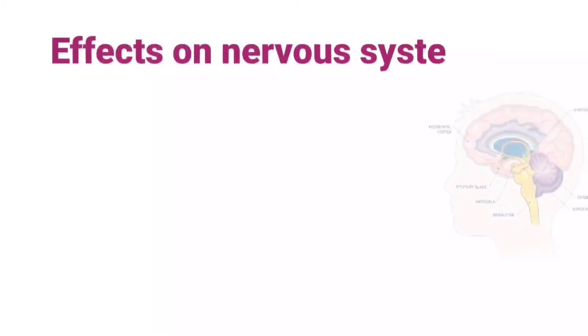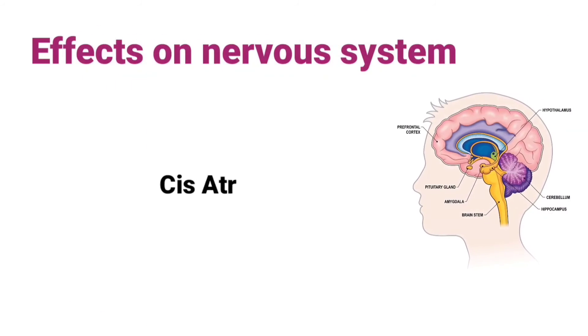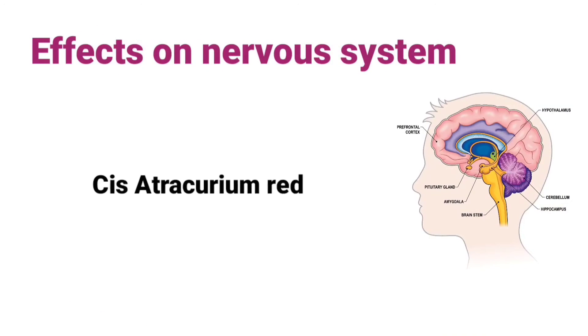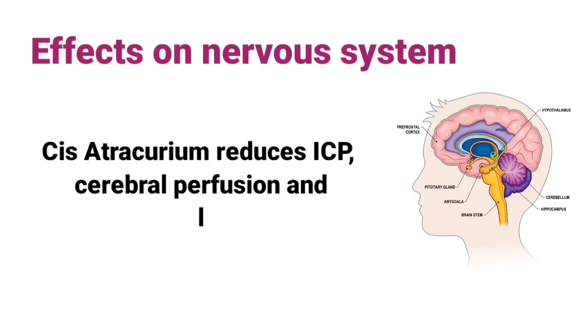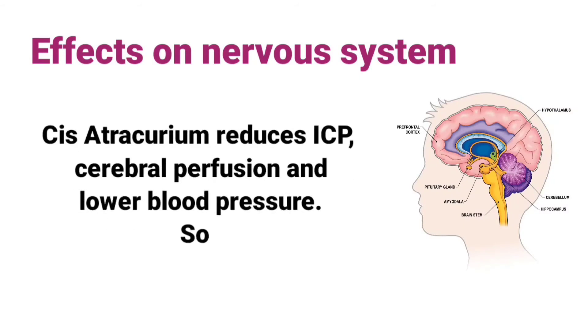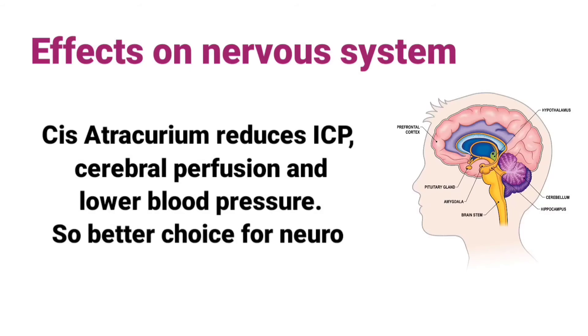Effects on Nervous System: Cisatracurium reduces ICP, cerebral perfusion, and lowers blood pressure. So it is a better choice for neuroanesthesia.